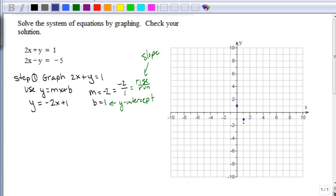And I'm going to do it one more time. Down 2 and over 1. Just get 3 points. And I'm going to draw a line.